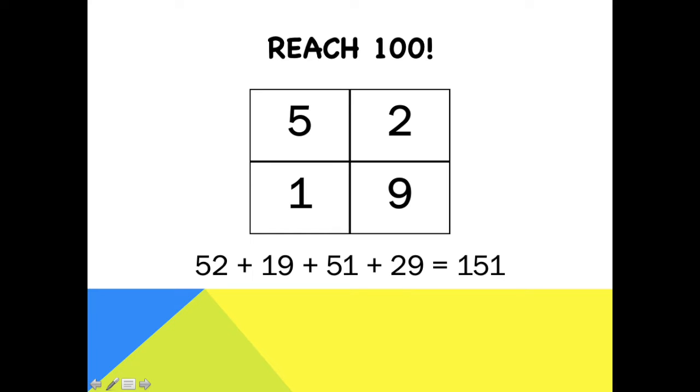52 add 19, add 51, add 29 equals 151. Remember, you can use your column addition to work out your total with your numbers.